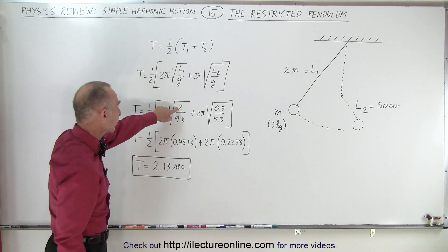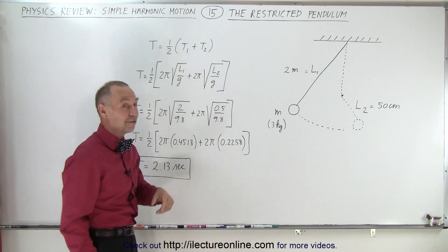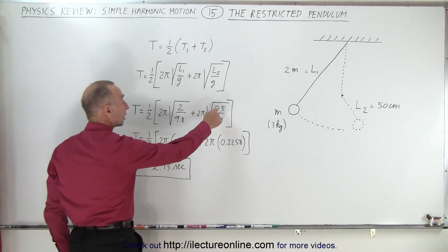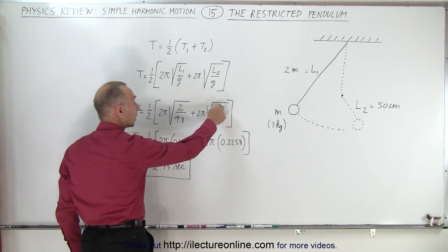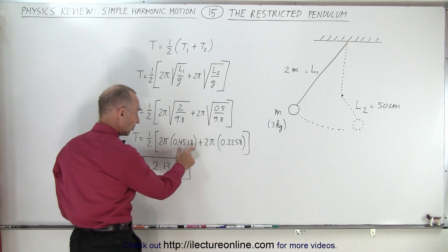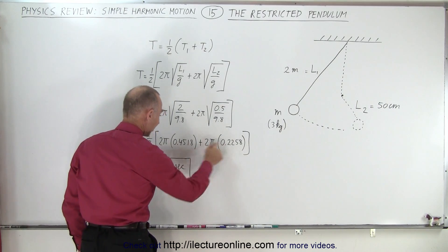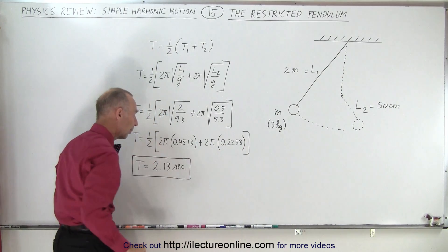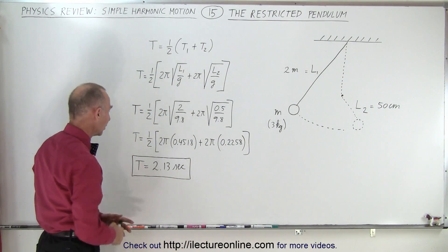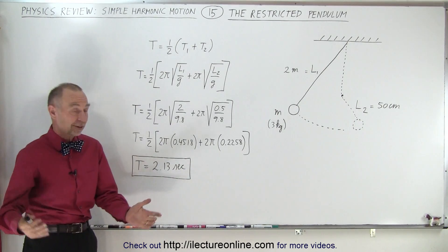In this case the length is two meters, and there it's 0.5 meters. Since it's one-quarter the length, it will have half the period, and you can see with the numbers that this is exactly half of this number right here. Working out the numbers, we end up with a period of 2.13 seconds.